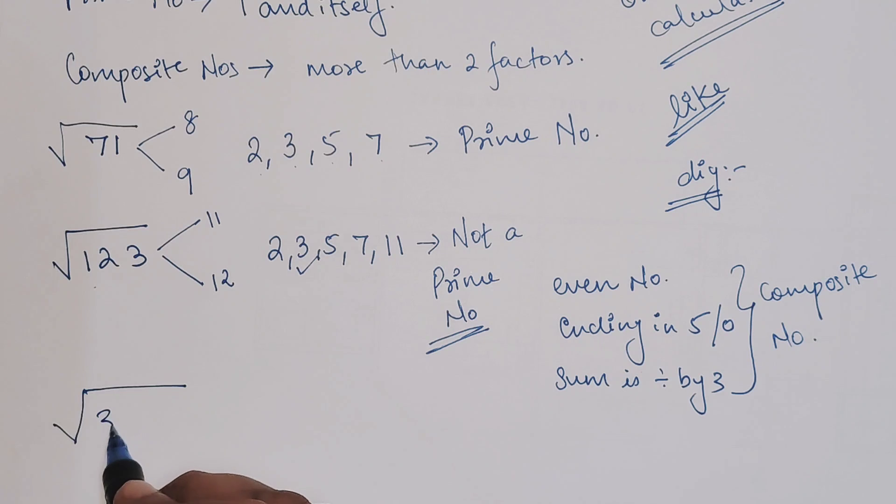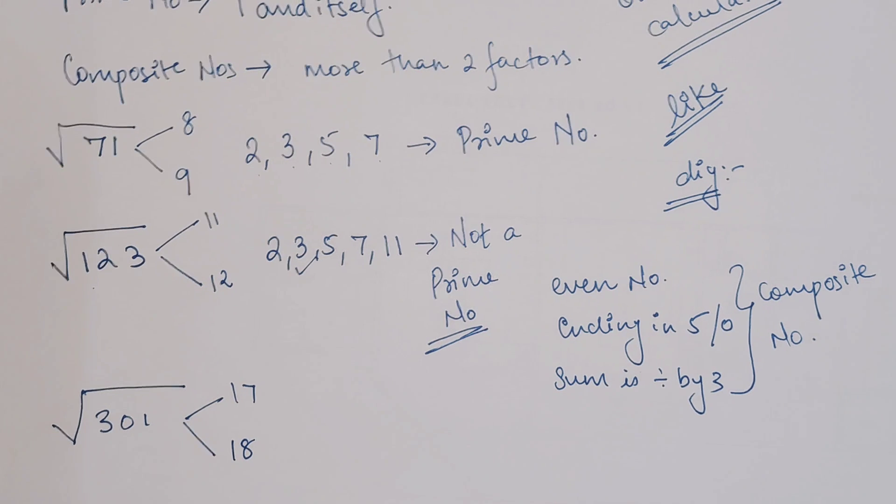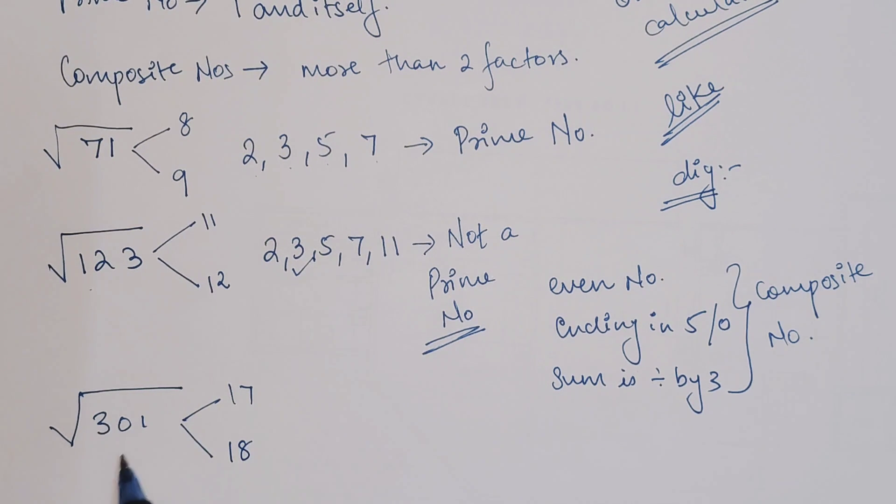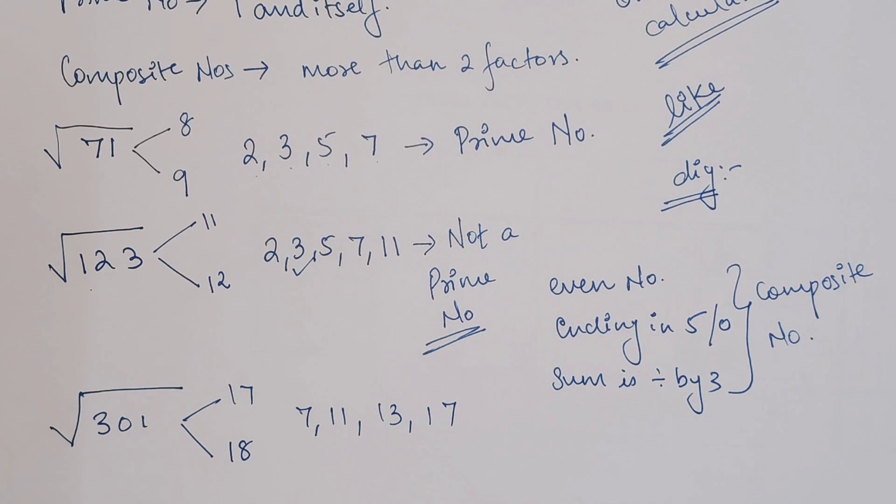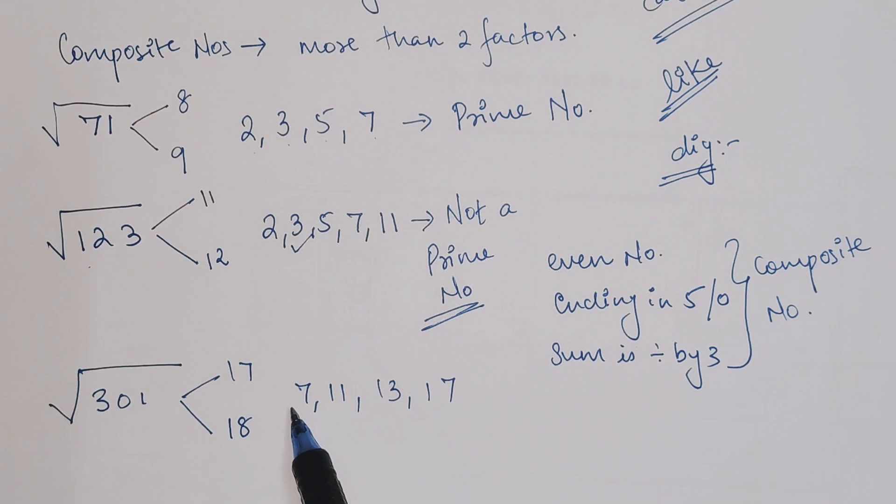Let's try a bigger number: 301. This will lie between 17 and 18. We'll first check the three criteria: it's not even, not ending in 5 or 0, and the sum total is not divisible by 3. So by default 2, 3, 5 are gone. What's left is 7, 11, 13, and 17.